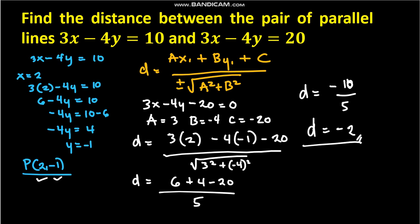The directed distance between the two parallel lines is -2. We keep the negative because it is directed. The negative sign means the point (2, -1) and the origin are on the same side of the second line, which is 3x - 4y = 20.